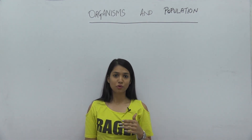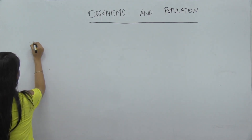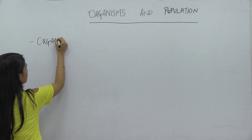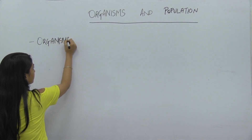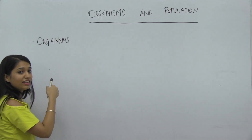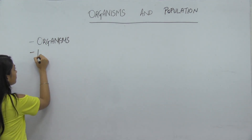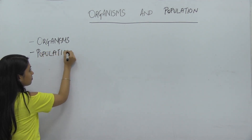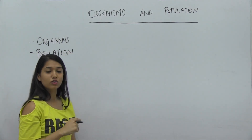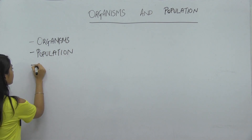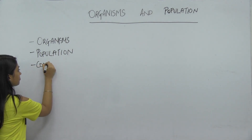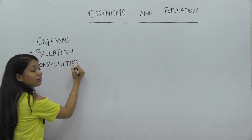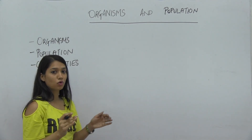Ecology is divided into four levels. The first level is organisms, that is an individual. The second is population, a group of individuals. The third is communities, that is a group of various populations.